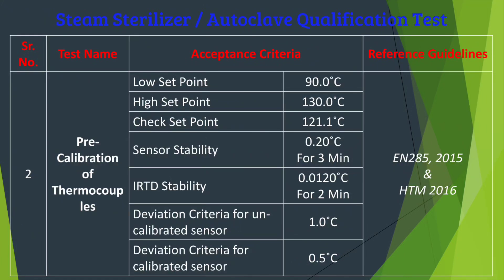Before starting performance qualification temperature mapping studies in a steam sterilizer, we need to calibrate the thermocouples being used to map the temperature. Pre-calibration is carried out at different set points: low set point at 90°C, high set point at 130°C, and check set point at 121.1°C. Sensor stability for pre-calibration is 0.2°C for three minutes, and IRTD stability is 0.012°C for two minutes.